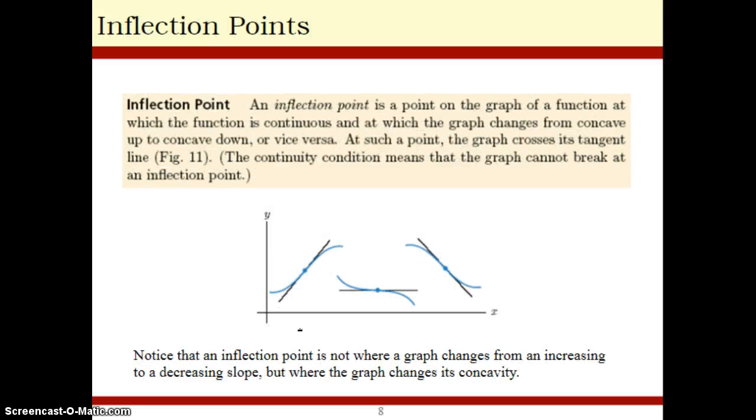Which brings us to inflection points. Inflection points are pretty simple. If you have a graph that is both concave up and concave down, the inflection point is the point at which the concavity changes. So, do you see here some examples of inflection points where your concavity is switching from up to down or down to up? So, that's pretty straightforward.